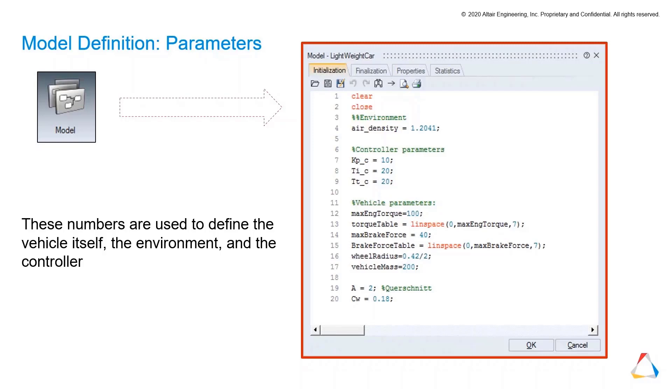A few words to the vehicle parameters at this point. You cannot just declare single parameters. You can also declare vectors, like we used for the torque table. There's the Linspace command, which will, for example, make a vector with the lower value zero and the upper value max torque engine. And seven means we will have seven steps between those both values. We will have seven values with a minimum and a maximum between those both values. And the same for the break force.